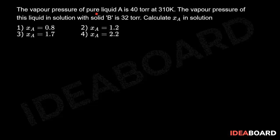The vapor pressure of pure liquid A is 40 torr at 310 Kelvin. The vapor pressure of this liquid in solution with solid B is 32 torr. Calculate the mole fraction of A in solution.